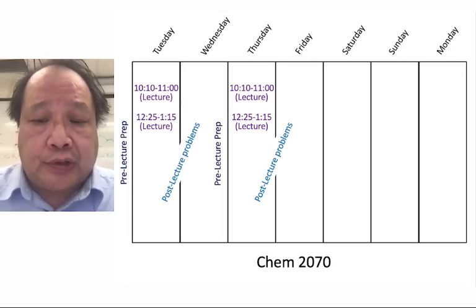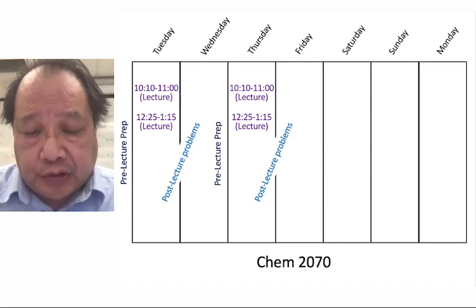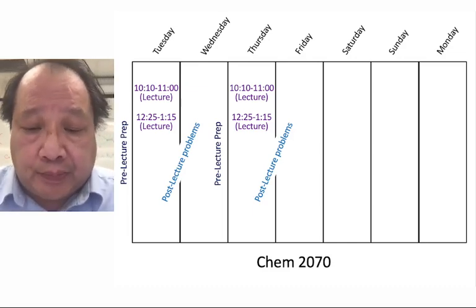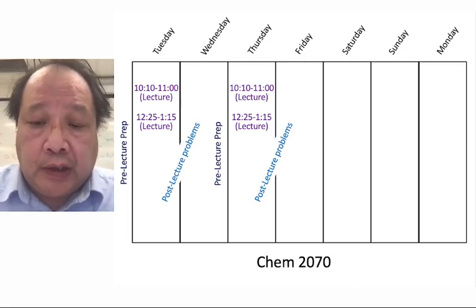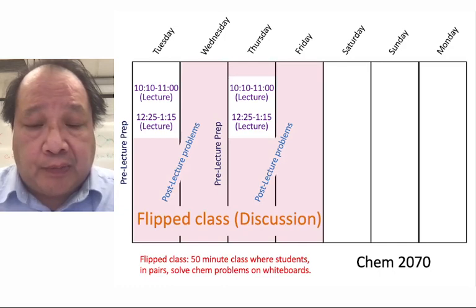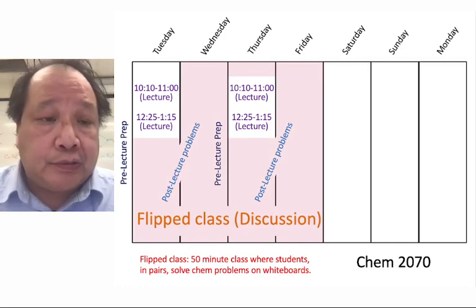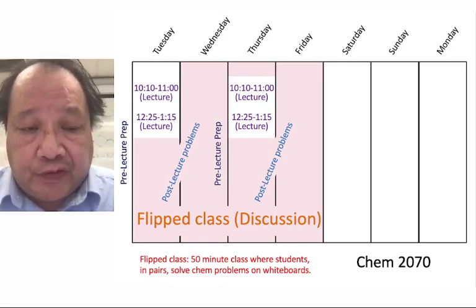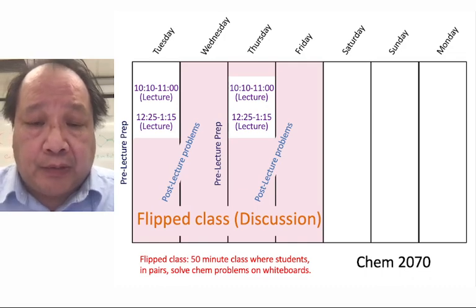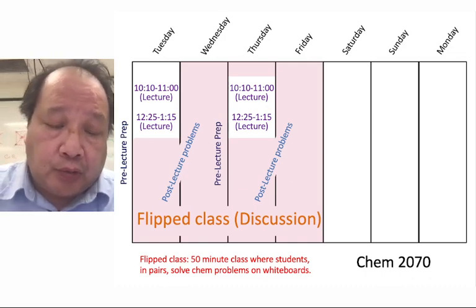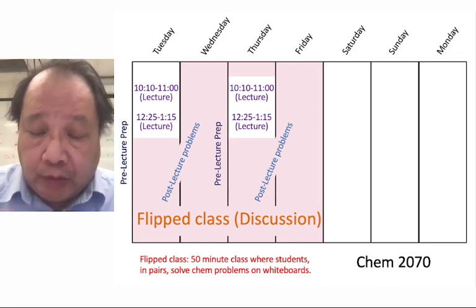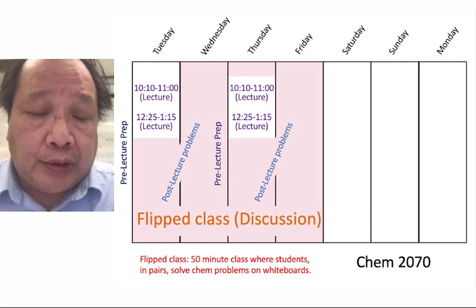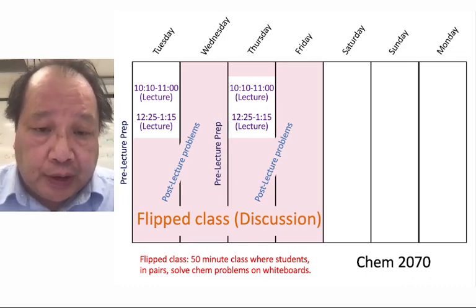The next part of the course, as we make the transition as smooth as possible for you, is problem solving. The first part of problem solving is the flip class — the discussion sections — where you'll come in for 50 minutes and work on whiteboards with another student, with undergraduate TAs monitoring and helping you as you progress.